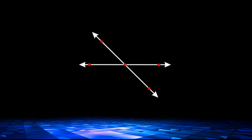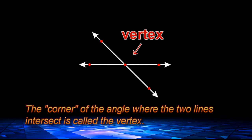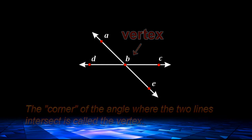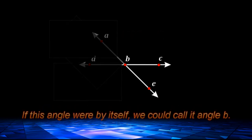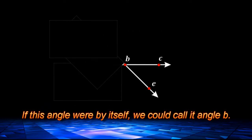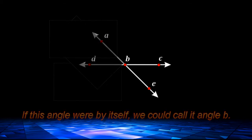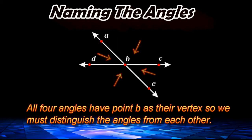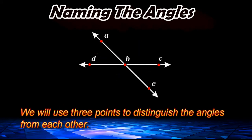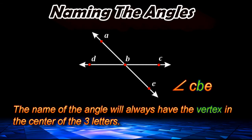Where the corner of this angle is, is called the vertex of the angle. Now, if we were to look at this angle all by itself, we could name the angle by its vertex, or call this angle B. But when we have four different angles, we cannot just say angle B because that could refer to any of the four angles shown. So what we do in this case is we name an angle by the three points shown on the angle, and we always have to put the vertex in the middle. This angle right here is angle CBE.